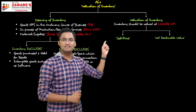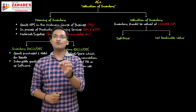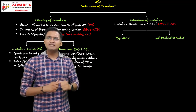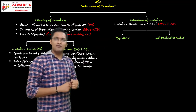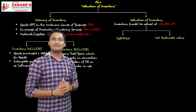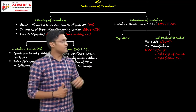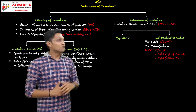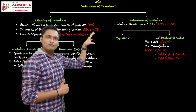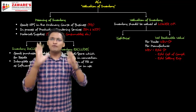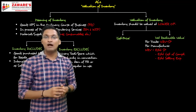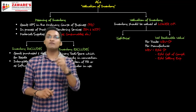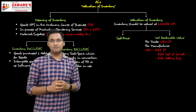Inventory should always be valued at lower of cost price or net realizable value (NRV). You may ask what NRV means. For a trader — someone who buys goods and sells them as-is — NRV means nothing but the selling price of that product. So for a trader, we compare cost price and selling price, and whichever is lower is considered for inventory valuation. But if the manufacturer's goods are semi-finished (WIP), NRV must be calculated using the formula: NRV = estimated selling price minus estimated cost of completion minus estimated selling expenses.